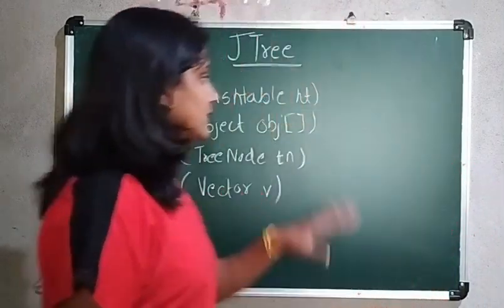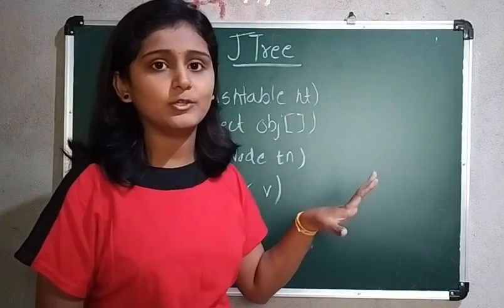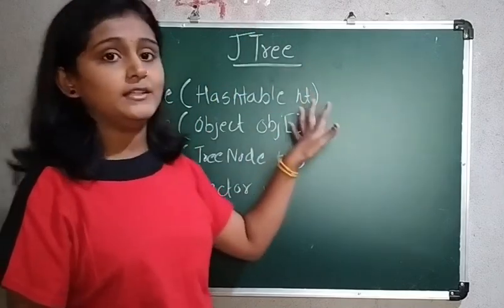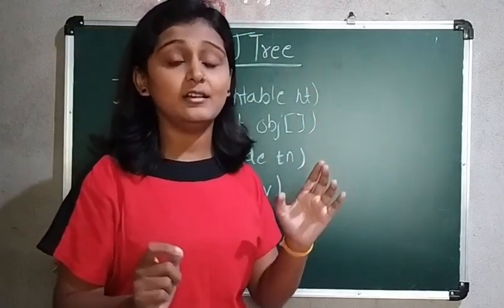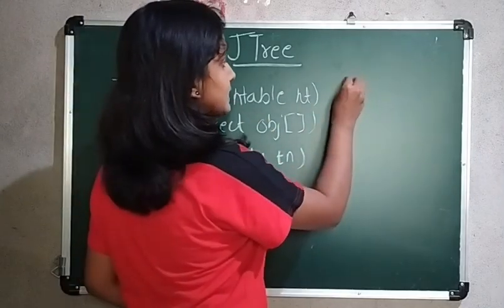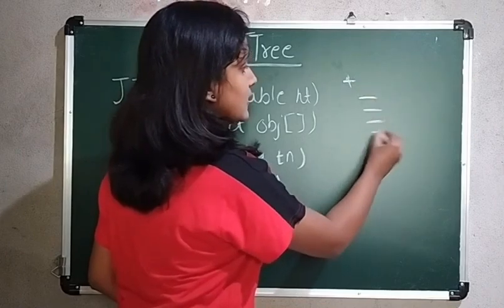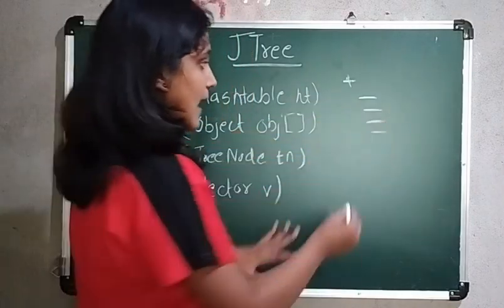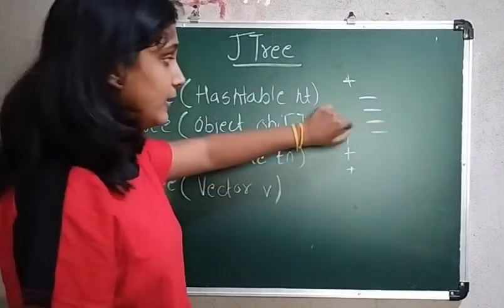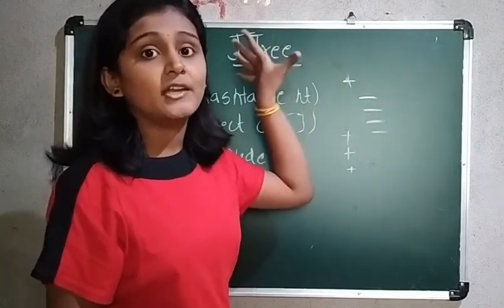Now here we have the next component which is a JTree. JTree is a hierarchical view of data. Whenever you open your PDF, at the left side there is a file structure — whenever you click on it, sub-files or sub-topics appear, and whenever you click again it will minimize. There are many files and sub-files organized this way, and for creating this we use JTree.